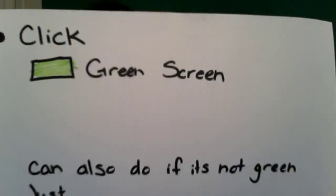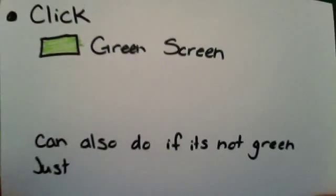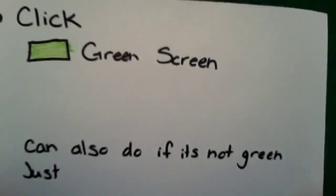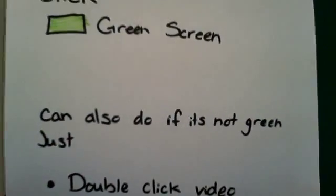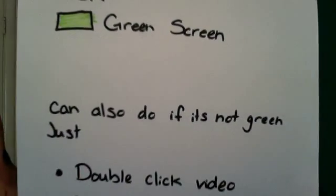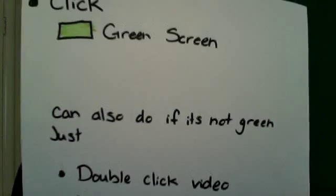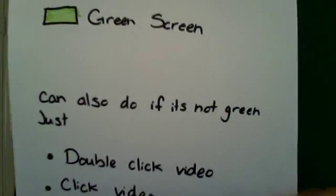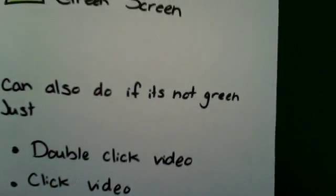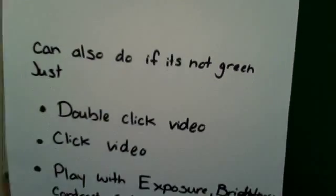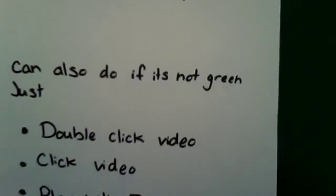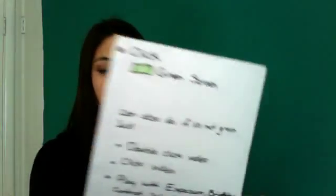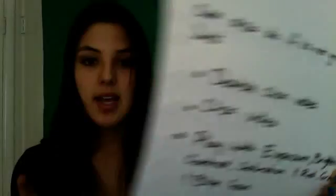You can also do this with videos that don't have any green in them. Double-click the video you want that doesn't have any green in it. A window is going to pop up — at the top middle of that window it should say Video, and on the right side it says Audio, but click Video. It's going to give you a page where you can play with exposure, brightness, contrast, and saturation. About 80 to 90% of the time you're going to use red, green, and blue — adjusting green to work with the green screen effect even without green in the background.